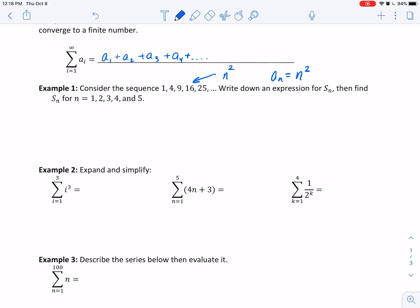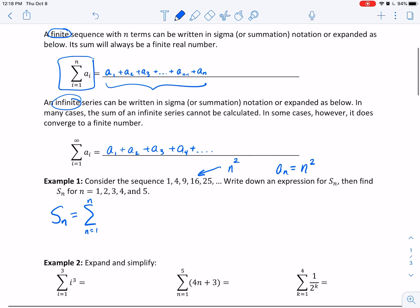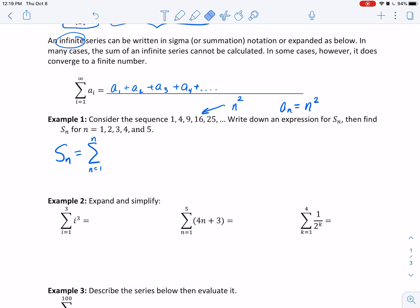They want us to write down an expression for the sum of these terms. So s_n, which tells us how many terms we have, is equal to the sum as i goes from 1 to n. Notice I used n twice, which is wrong. I need to use a different variable, so this is the sum from i equals 1 to n of i squared.